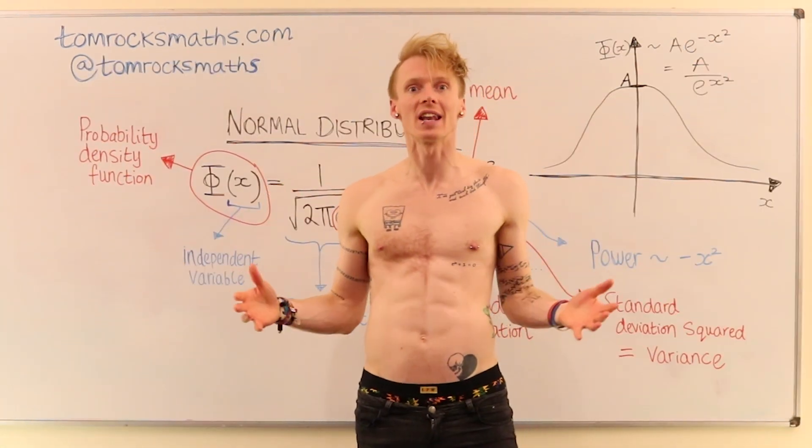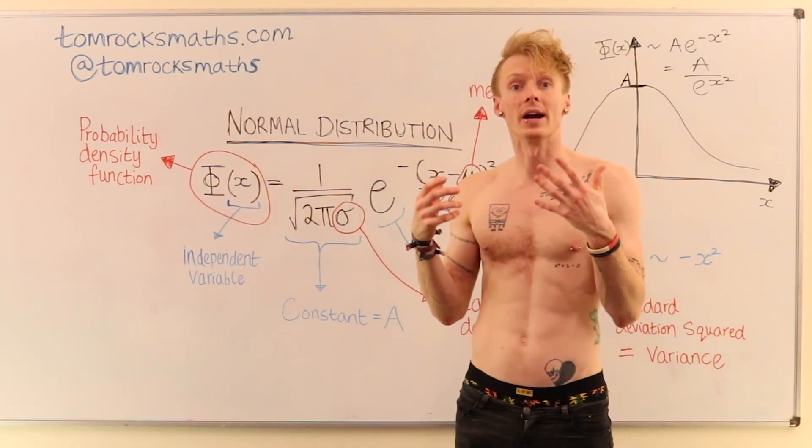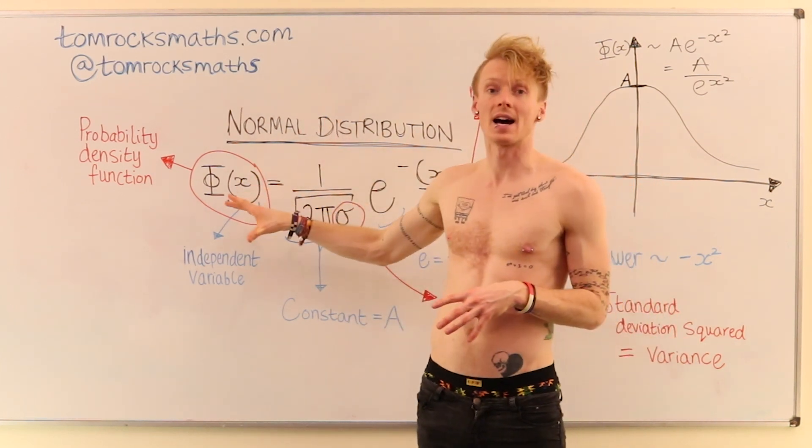Now that we've stripped back to the third layer, we're going to look at the individual terms in our equation in the normal distribution. Beginning on the left-hand side,